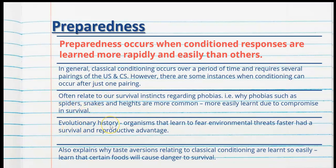Preparedness also relates to evolutionary history — organisms that learn to fear environmental threats faster had a survival and reproductive advantage. This also explains why taste aversions are learned so easily. Anyone who's had food poisoning understands: if a person is violently ill from KFC, it's not likely they'll quickly go back and eat it. A person may eat KFC once and never eat it again without needing several pairings to feel nauseous at the sight or smell of it. This relates to preparedness — one trial learning driven by survival instinct.